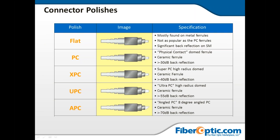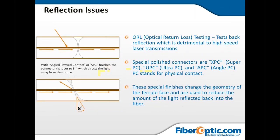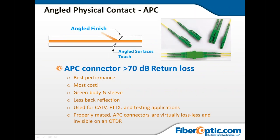Here you can see the UPC on top versus the APC on the bottom, which is at an 8-degree angle — that's the pictorial difference between the two. For APC: APC is angled physical contact, UPC is ultra-physical contact. The two ceramic ferrule surfaces actually touch and make physical contact, with pressure exerted on the end faces of roughly 40,000 to 45,000 kpsi — quite a lot of pressure on the connector end faces.